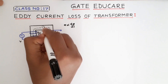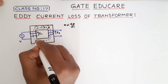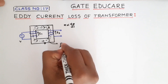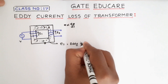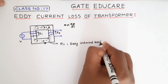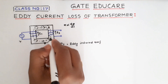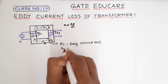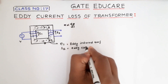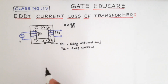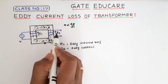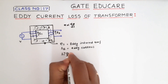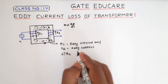An EMF will be induced into the transformer core — a localized induced EMF throughout the core body. This induced EMF is called the eddy-induced EMF (E_i). Depending upon the resistance of the core material, a current starts circulating in the transformer core; that is called the eddy current (I_i). This eddy current does not transmit any power from primary to secondary — it only circulates in the transformer core, producing an I²R loss, which is called the eddy current loss.